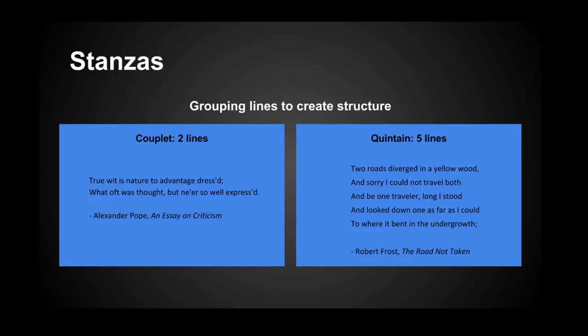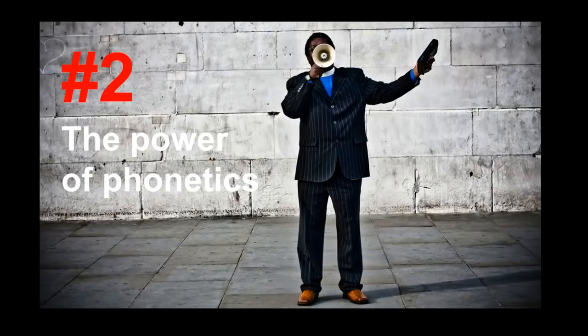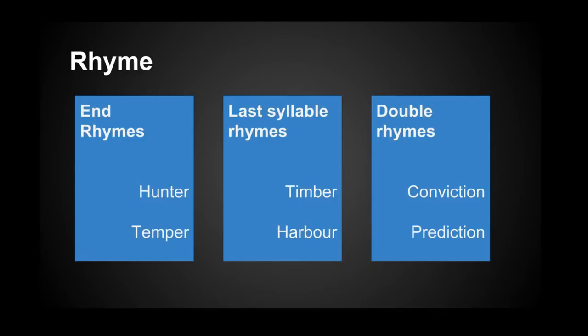Poets derive much of their power from the sounds of spoken words. There are several phonetic properties of language that you can employ. The first device that we shall talk about is rhyme — something we've all learned about since childhood. The pair of words 'hunter' and 'temper' exhibit ending rhyme. Hunter ends with 'ter' and temper with 'per'. These are not the exact same syllable, but they do have a similar ending sound — it's the 'er' that makes this pair demonstrate ending rhyme.